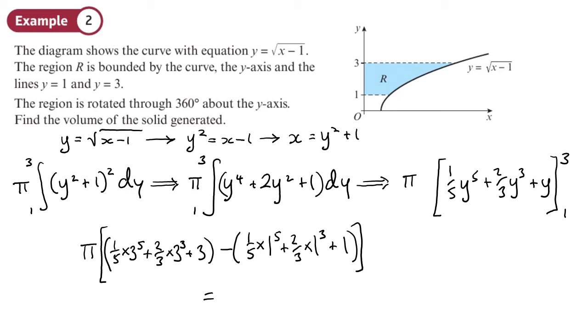So the first bracket: one-fifth times 3 to the 5 plus two-thirds times 3 cubed plus 3 gives me 348 over 5. So I've got π times 348 over 5, minus the second bracket. The second bracket: one-fifth plus two-thirds plus 1 gives me 28 over 15.